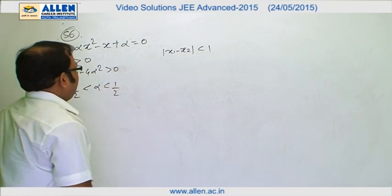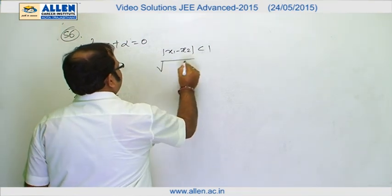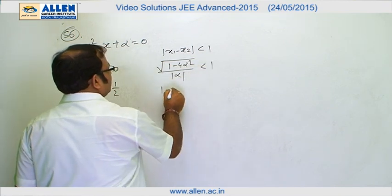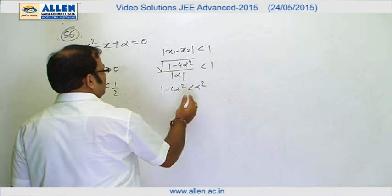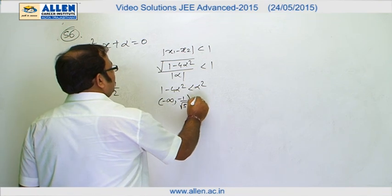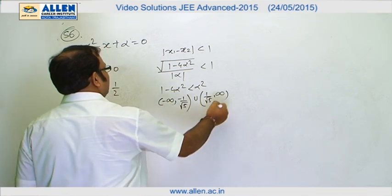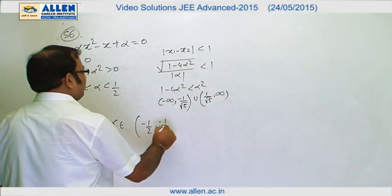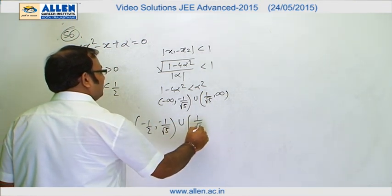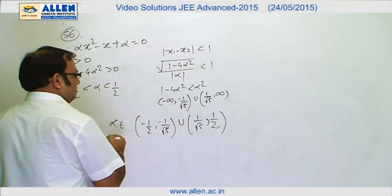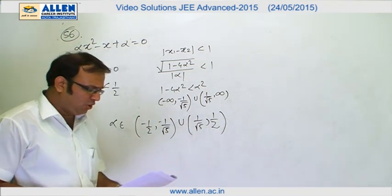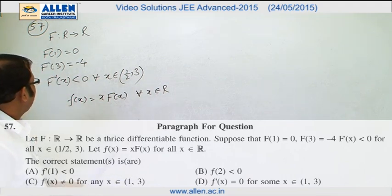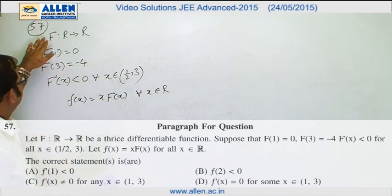We also use the formula for root difference: √D / |a| = √(1 - 4α²) / |α| < 1. Squaring gives 1 - 4α² < α², so 5α² > 1, resulting in α ∈ (-∞, -1/√5) ∪ (1/√5, ∞). Taking the intersection with (-1/2, 1/2), we get α ∈ (-1/2, -1/√5) ∪ (1/√5, 1/2). Options A and D appear to be correct.